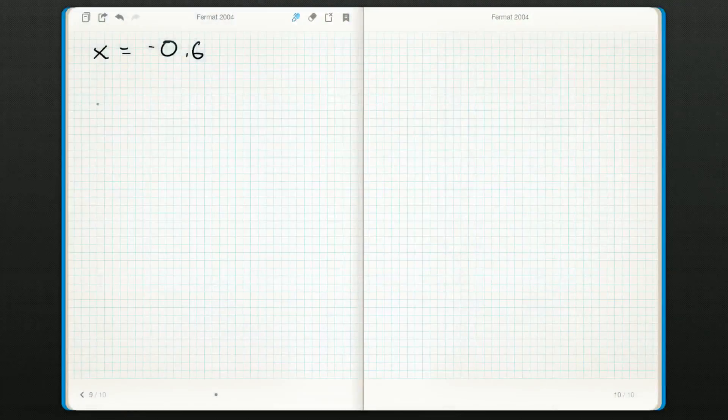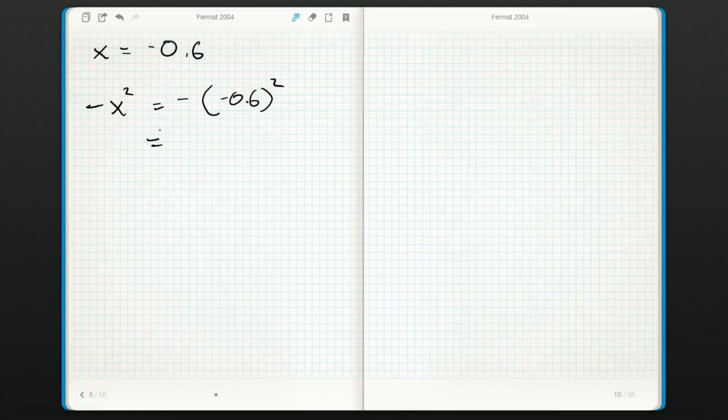So they want negative x squared. So this will be negative of negative zero point six all squared. Do be careful when it's negative x squared. Remember your order of operations. We do the square before we multiply by negative one. So we'll have negative negative and this will be zero point three six.